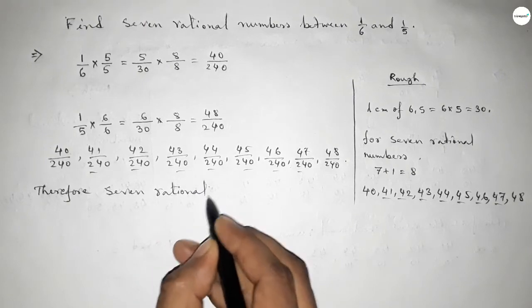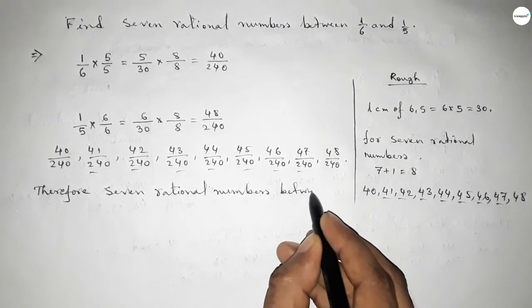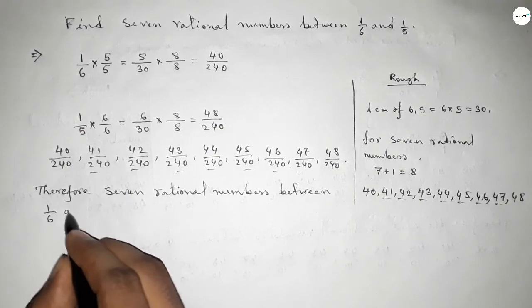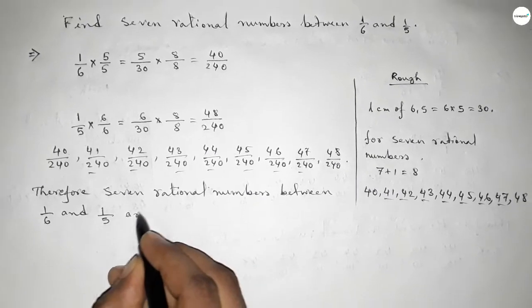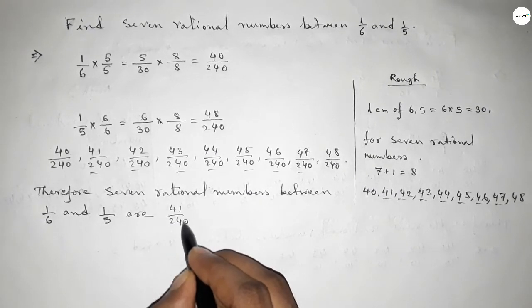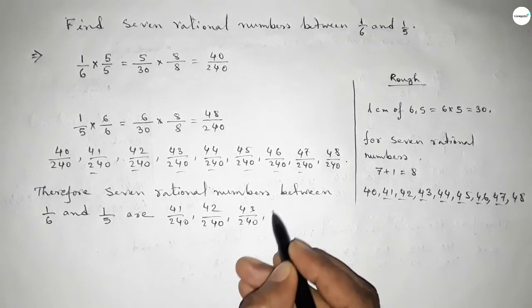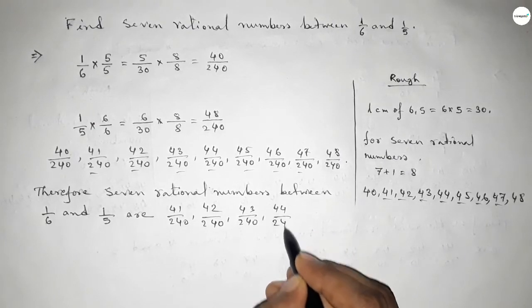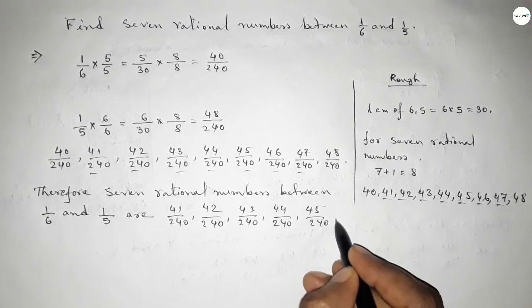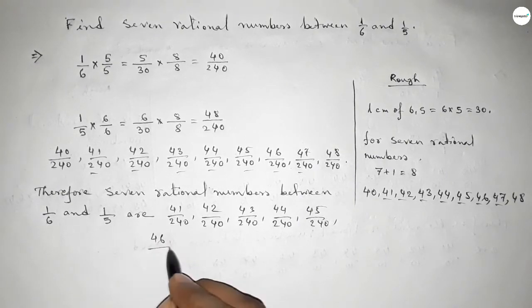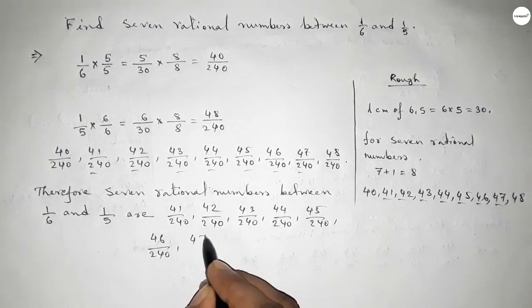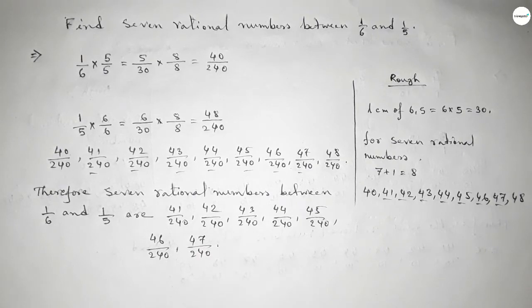Therefore, seven rational numbers between 1 over 6 and 1 over 5 are: first one is 41 over 240, 42 over 240, up to the last one 47 over 240. So this is the process to find out seven rational numbers between 1 over 6 and 1 over 5.